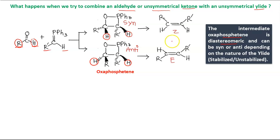From the syn intermediate we finally get the Z alkene, because the lowest priority groups are on the same side. The E alkene we get from the anti diastereomer. Whether syn or anti will be the major intermediate is dependent on the nature of the ylide.